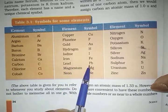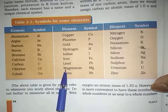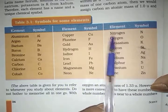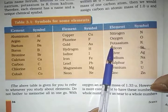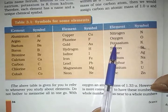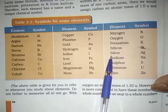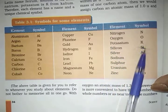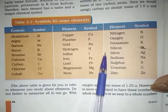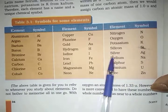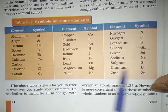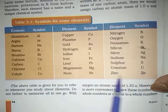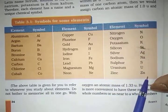Lead — Pb. Magnesium — Mg. Neon — Ne. Nitrogen — only N. Oxygen — O. Potassium — K, because the first name of Potassium was Kalium, that is why the symbol K is used. Silicon — Si. Silver — Ag. Sodium — Na. Sulphur — S. Uranium — U. Zinc — Zn.